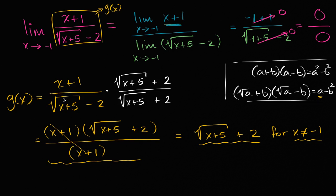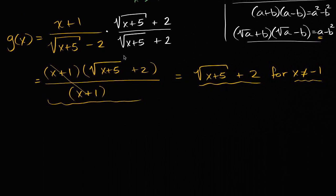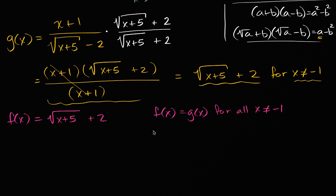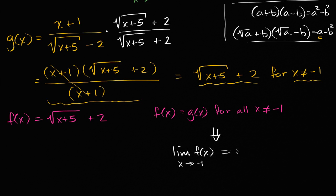This is a simplified version of g of x — it is the same thing for any input x where g of x is defined, and it has the exact same domain once we put in this constraint. Now, how does this help us? We define f of x equal to the square root of x plus five plus two — without the constraint. Then f of x equals g of x for all x not equal to negative one. And if two functions are equal for all x not equal to some point, their limits as x approaches that point are equal.